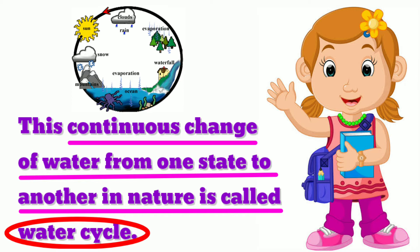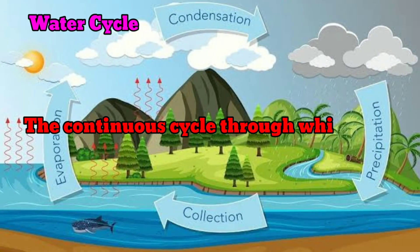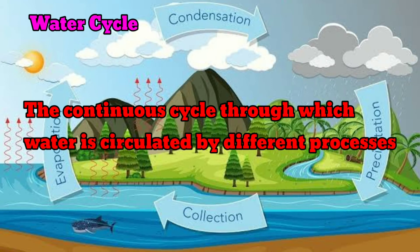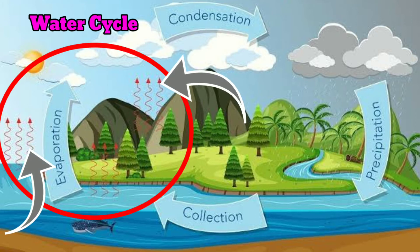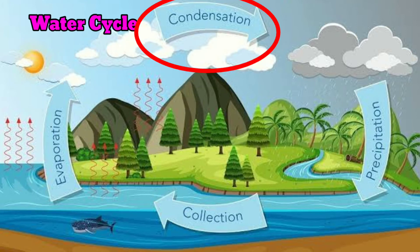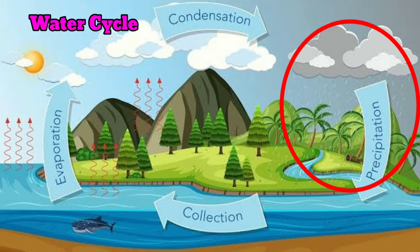Continuous change of water from one state to another in nature is called water cycle, which means oru nilayil irundu, matro oru nilayikku, near matramadai inre thodarchi yana, nigewe nitsurachi, enre ađikkapadukradu. In other words, the continuous cycle through which water is circulated by different processes like evaporation, condensation and precipitation is called water cycle.